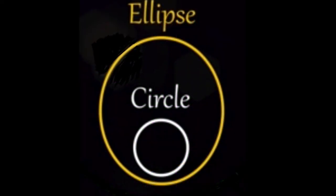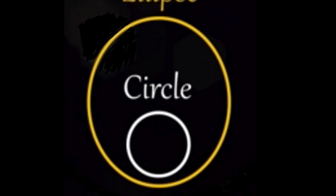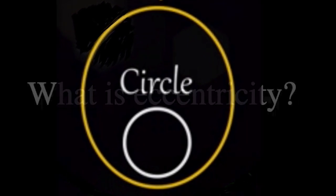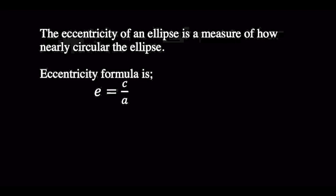Hello students, today we are going to discuss the eccentricity of ellipse and circle. What is eccentricity? The eccentricity of an ellipse is a measure of how nearly circular the ellipse is. The eccentricity formula is e = c/a.